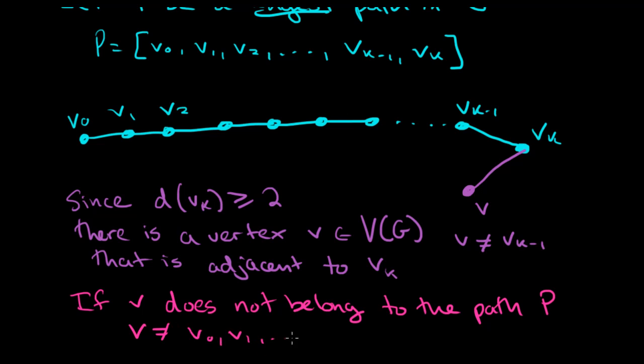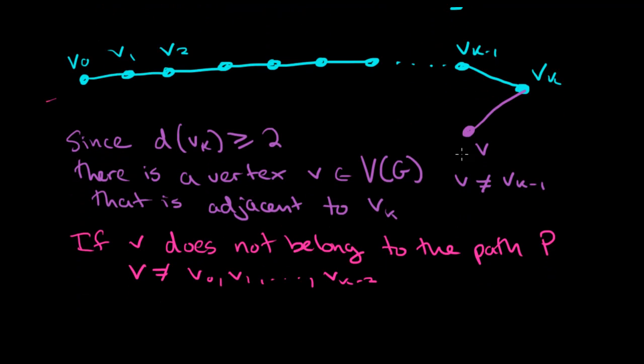V0, V1, or any of these guys, all the way up to Vk minus 2, if that vertex is truly different from the rest of the path, then we have a longer path, a longer path in the graph.